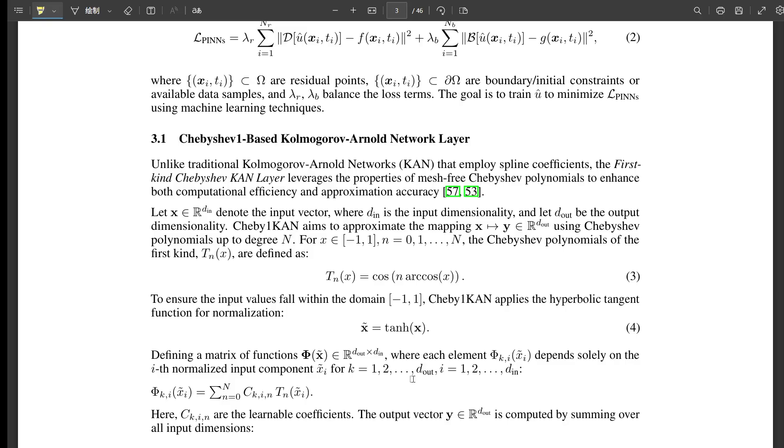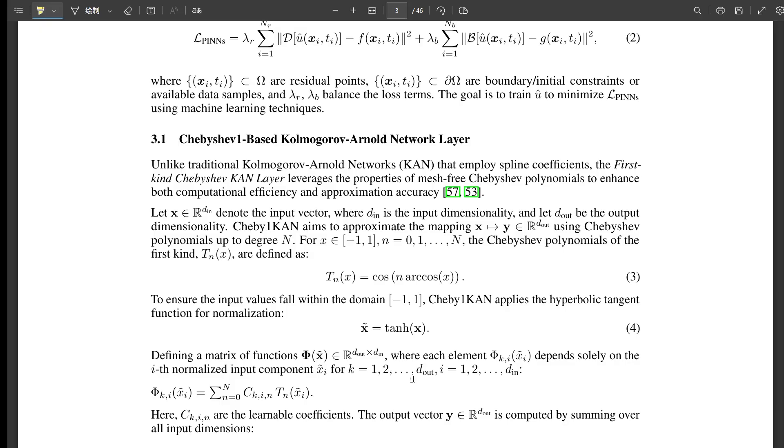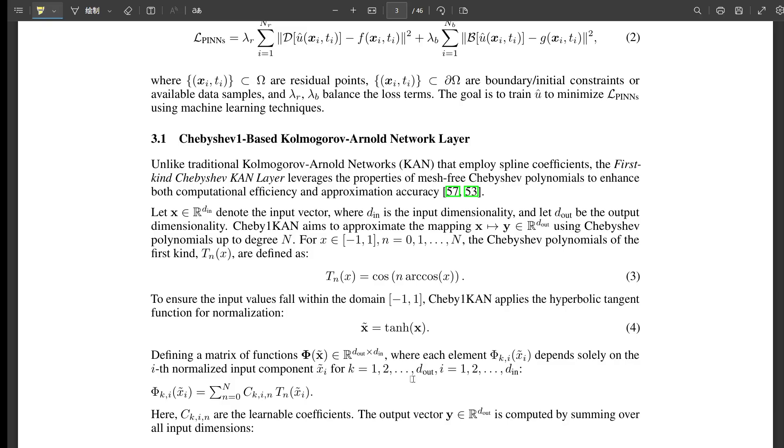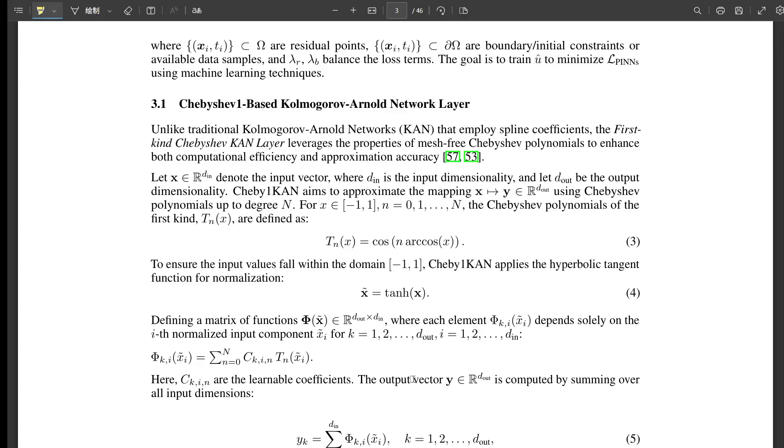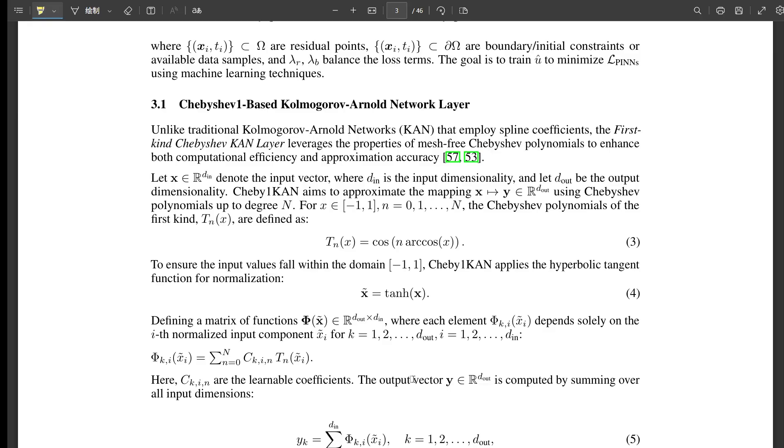Rank diminution - what does that mean for the network? Think of it like the network losing its expressive power, its ability to represent complex functions as you make it deeper. Layer by layer, its effective complexity shrinks. It gets less capable as it gets deeper. The paper points to three main reasons why this happens. It relates to the Jacobian matrix of the network - basically how sensitive the output is to the input. That matrix loses rank.